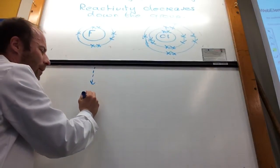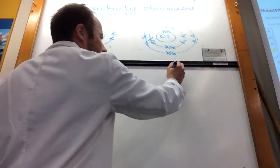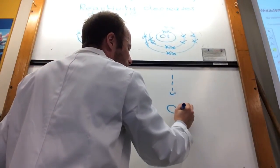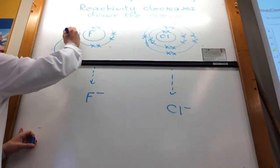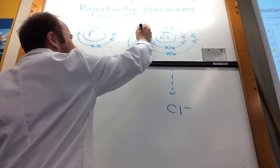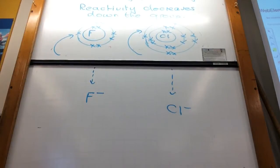Fluorine wants to gain an electron to become F minus and chlorine wants to be Cl minus. They've got to have an electron coming in there, like so.